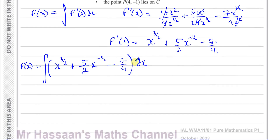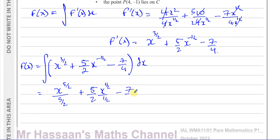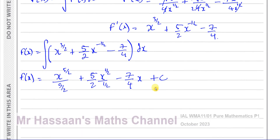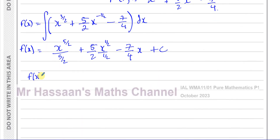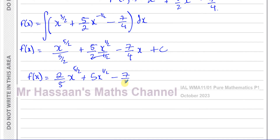Simplifying: dividing by 5/2 is the same as multiplying by 2/5, giving (2/5)x^(5/2). The (5/2) divided by (1/2) simplifies — the halves cancel — giving 5x^(1/2). So f(x) = (2/5)x^(5/2) + 5x^(1/2) − (7/4)x + C. But we still need to find what C is.